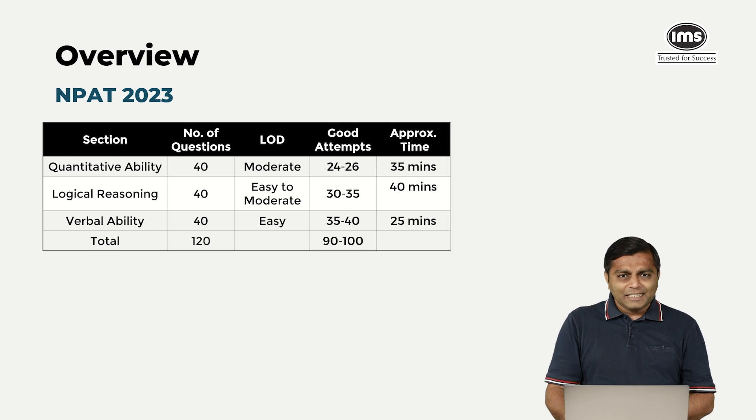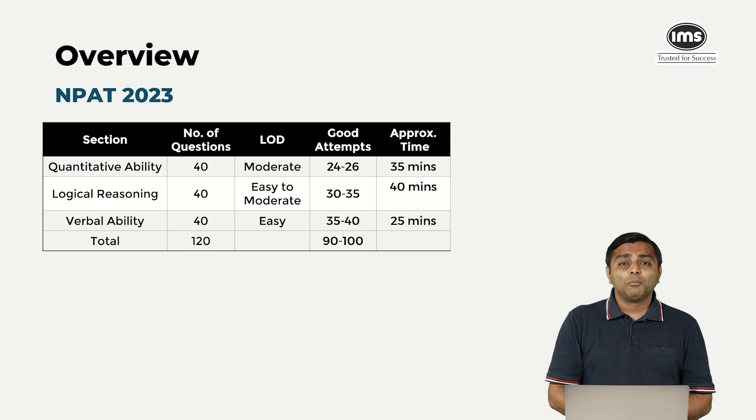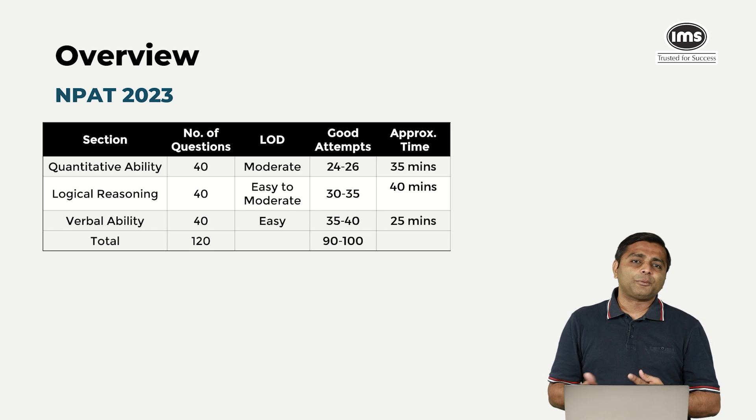Verbal as always has been easy. So 35 to even 40 would not be a bad number for attempts, and you need to really have very good accuracy with verbal. Because the questions are not very lengthy, the RCs are not very long, and there are no difficult critical reasoning questions that you will see in other exams. We think 25 minutes should be good enough for you to be able to tackle this section.